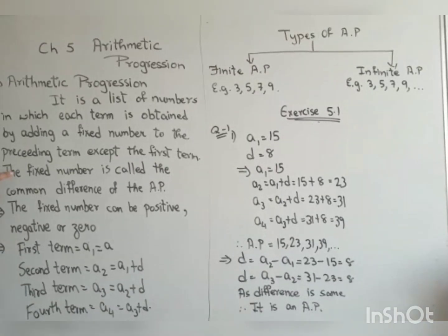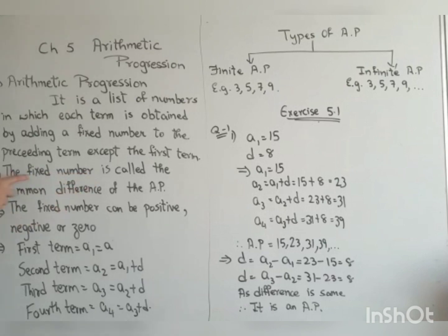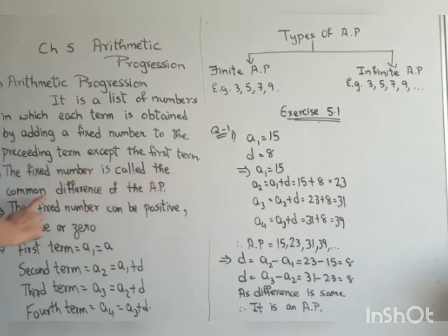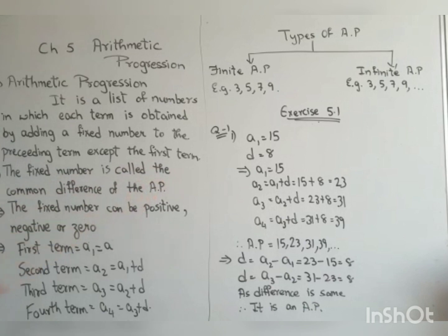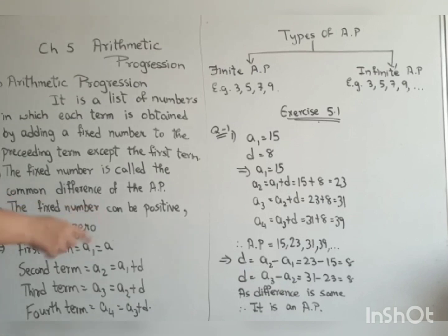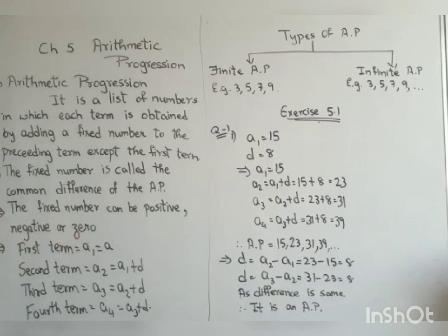The fixed number we are adding is called the common difference of the A.P., and its symbol is D. The fixed number we are adding can be positive, negative, or zero. That means the difference can be positive, negative, or zero.